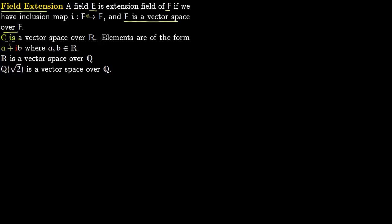Let us see some examples. Complex numbers C is a vector space over real numbers R, and elements are of the form a + ib where i is square root of minus 1 and a, b are real numbers. The basis here is {1, i} over R.